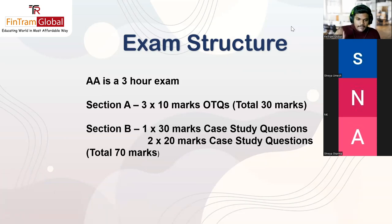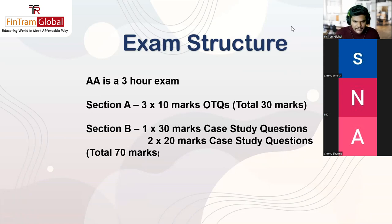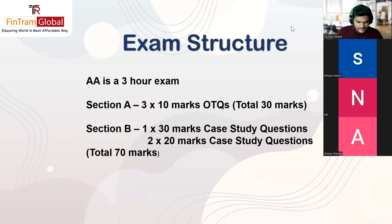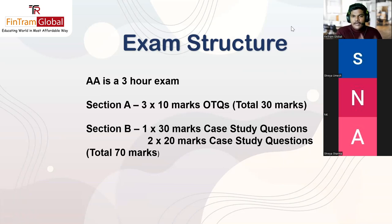In Section B, you have three questions — all case studies. The first question is worth 30 marks, and the other two are 20 marks each, giving a total of 70 marks in Section B. Even though I say case study, it's not about stating definitions generically — it's about dealing with a practical scenario as an auditor.